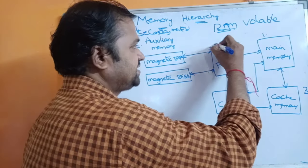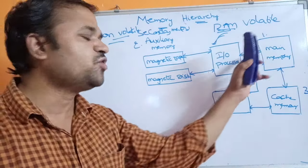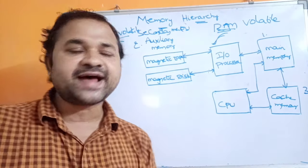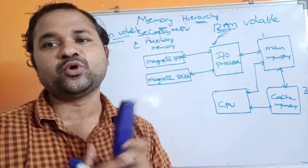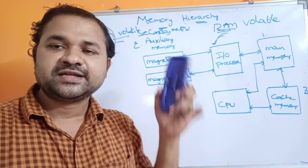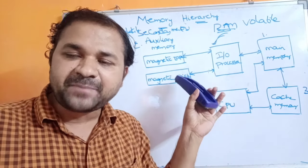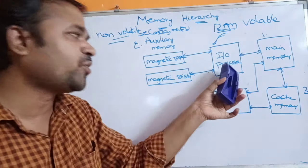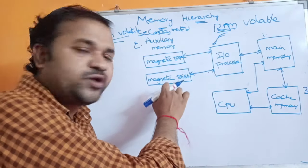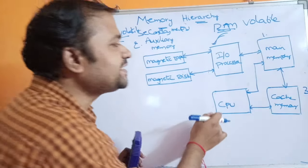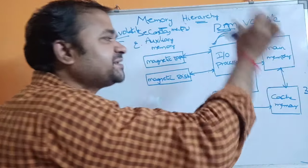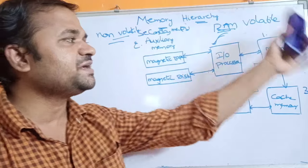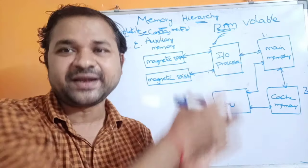Now let's talk about the IO processor — Input Output processor. IO processor is mainly useful in order to transfer data from hard disk to main memory. Whenever we save a program, it is stored in hard disk. During compilation also, the program is saved in hard disk. But at the time of execution, the IO processor transfers the program from hard disk to main memory so that the CPU can execute it. So IO processor transfers data from secondary memory to main memory.